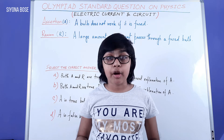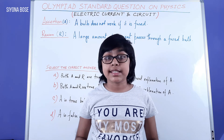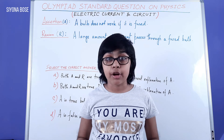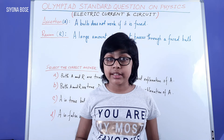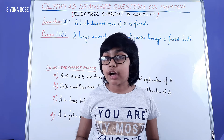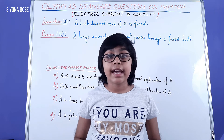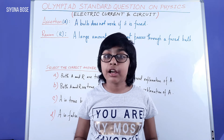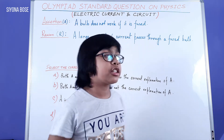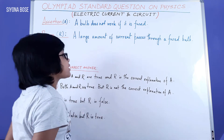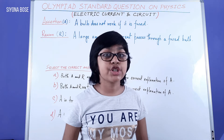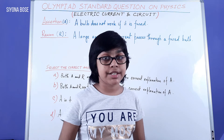So if the filament is broken, that means the circuit is broken, and as the circuit is broken, there is no flow of current, and as there is no flow of current, the bulb does not work. So our assertion is correct.